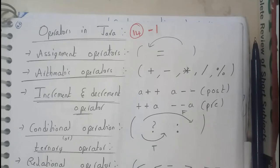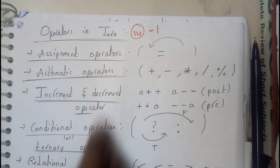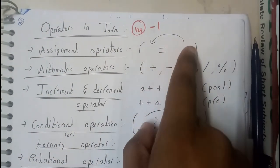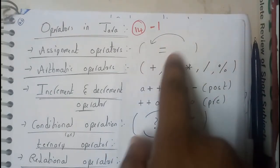So a few of the basic operators are assignment operator, which is nothing but we will be assigning a value to another variable. So x equal to 9, so 9 will be stored in x like that.